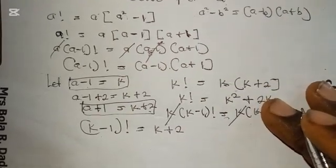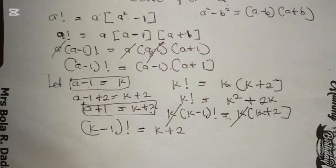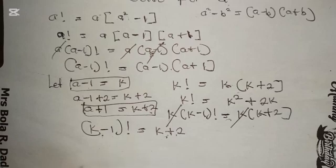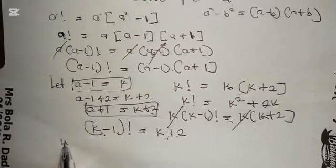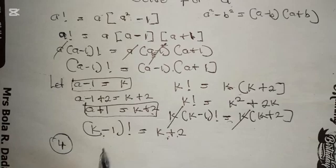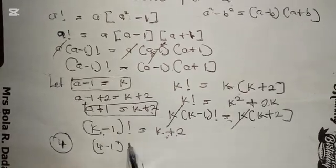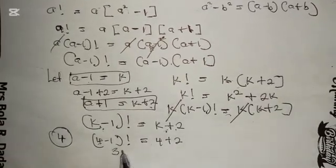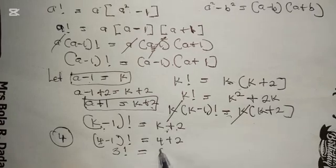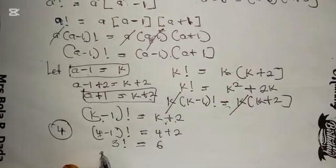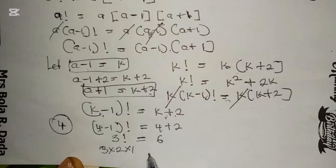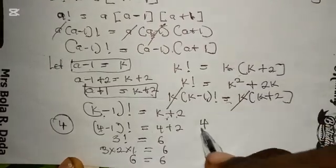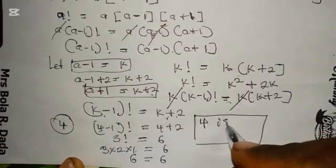Now we use the trial method — we substitute values of k until both sides balance. Starting with k equals four: (4 minus 1) factorial equals 4 plus 2, which gives 3 factorial equals 6. Since 3 factorial equals 3 times 2 times 1 equals 6, and the right side is also 6, the two sides are equal. Therefore k equals four is the solution.